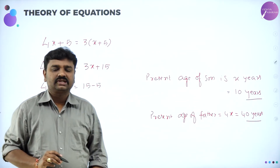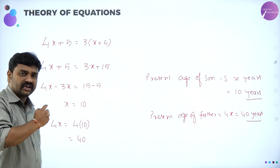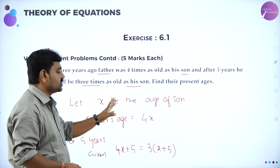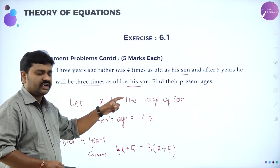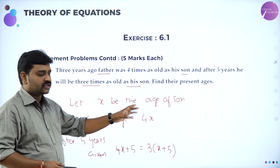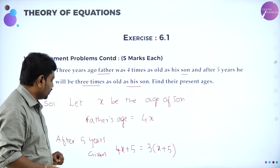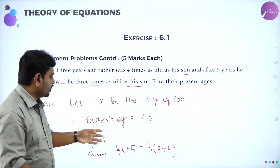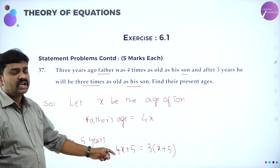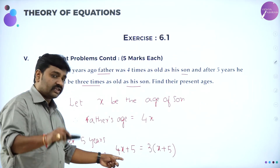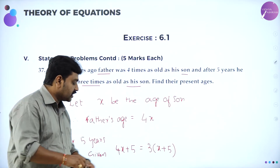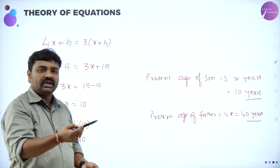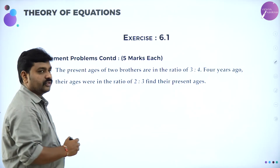So dear students, reading the question and converting it into an equation is important. When you read the question, they are comparing father's age with son's age, so assume son's age as x. Father's age is 4 times son's age, so 4x. These are present ages. After 5 years, both ages increase by 5, so son's age is x plus 5 and father's age is 4x plus 5. Father's age is 3 times son's age, giving 4x plus 5 equals 3(x plus 5). Solve to get x and 4x.